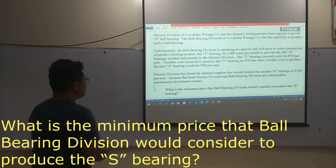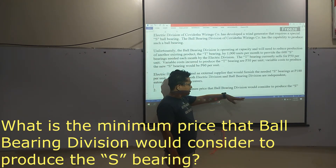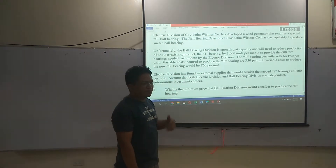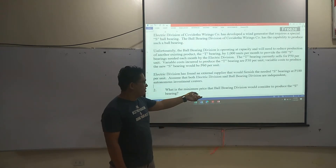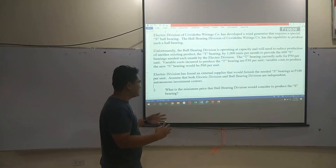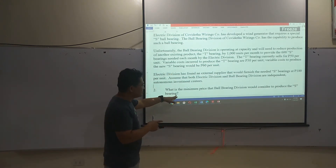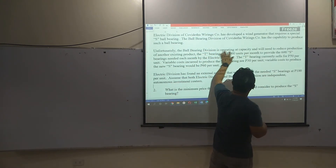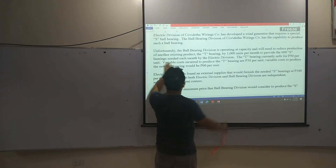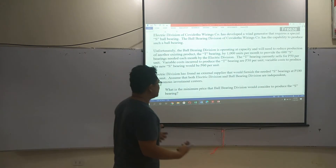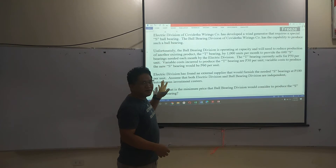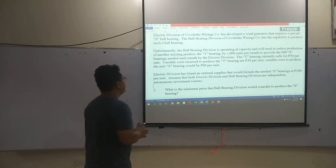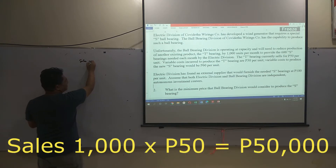The next question is: what is the minimum price that ball bearing would consider for the S bearing? The first question was electric division's maximum price to pay; the second question is what is ball bearing's minimum price to charge electric division? We have to consider that if they sell to electric division, they would have to sacrifice T bearings — 1,000 units of T bearings — just to produce 600 units of S bearings. So we must factor that into our calculation. The minimum price is the income they are currently getting from T bearings that they will be giving up.